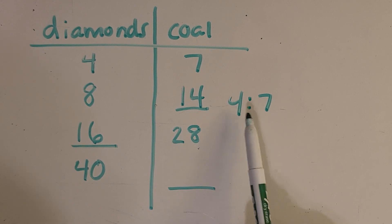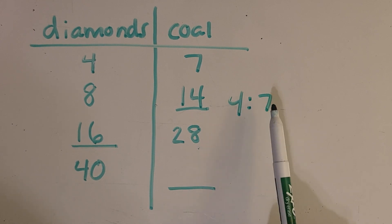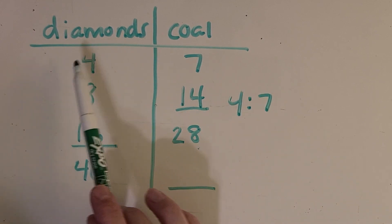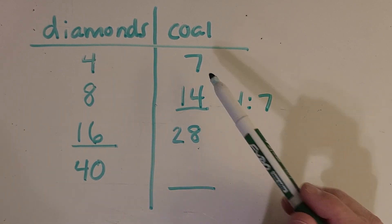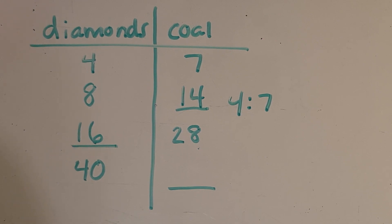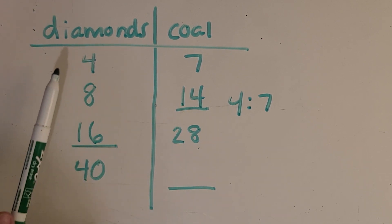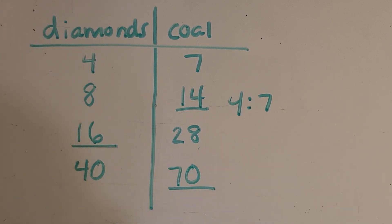This particular ratio is a little more challenging than the last one because it doesn't have an easy way to jump between diamonds and coal, since seven is not a multiple of four. That's why I like going down the columns. Now I've got 40 diamonds — what about coal? Some of us might notice four times ten, so seven times ten is 70. Great job.